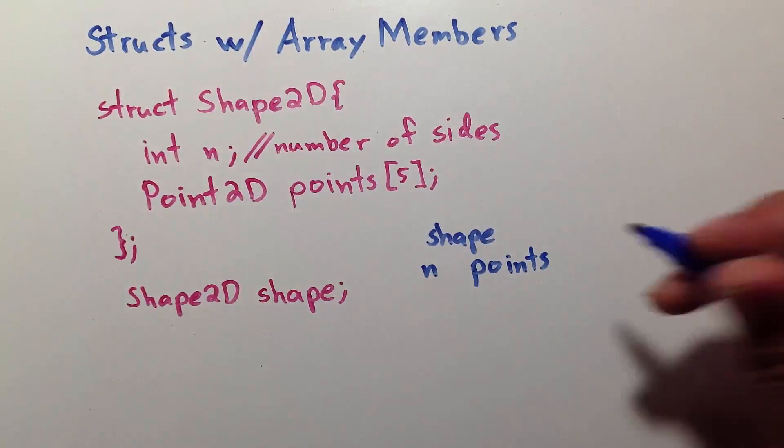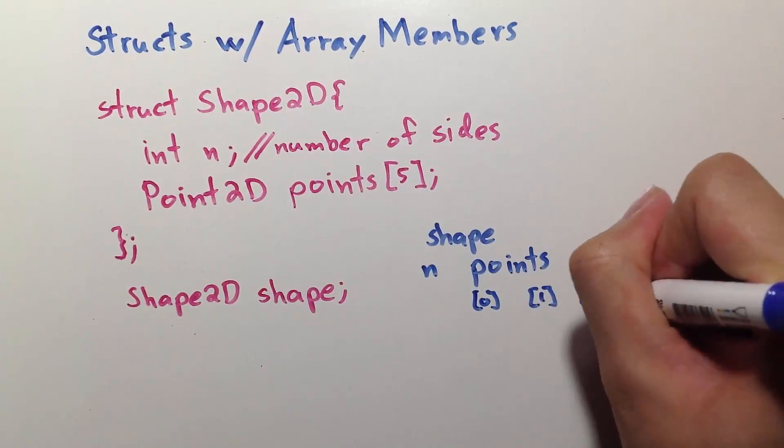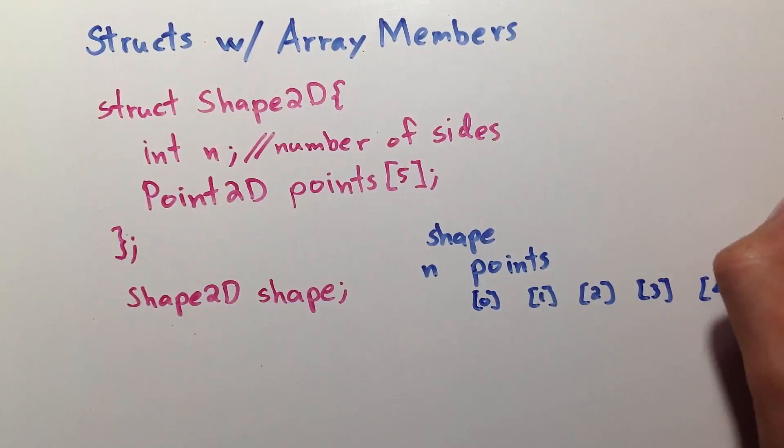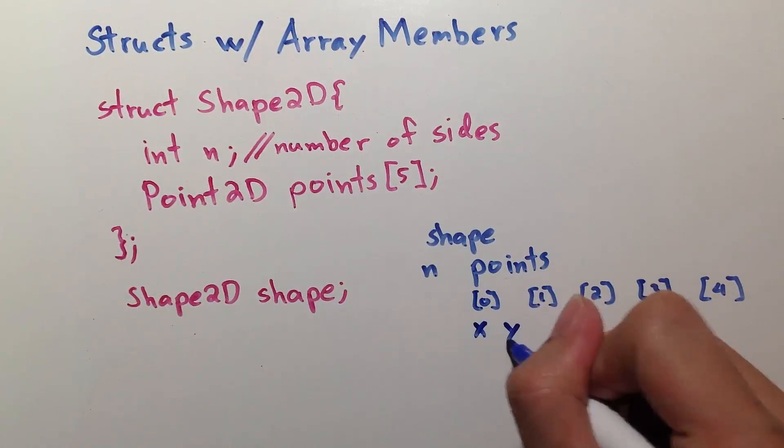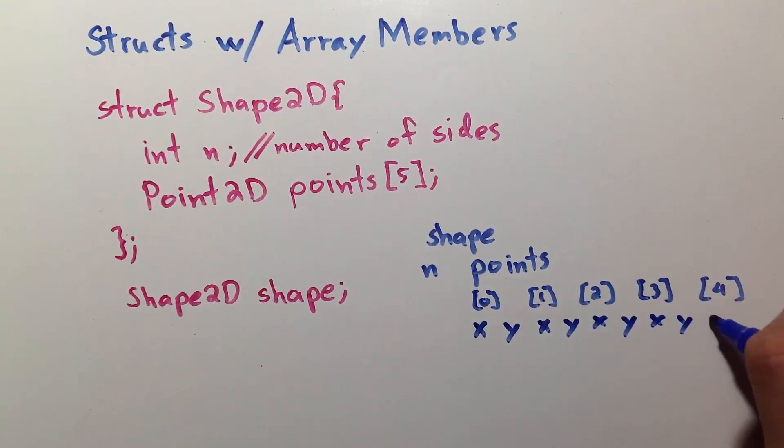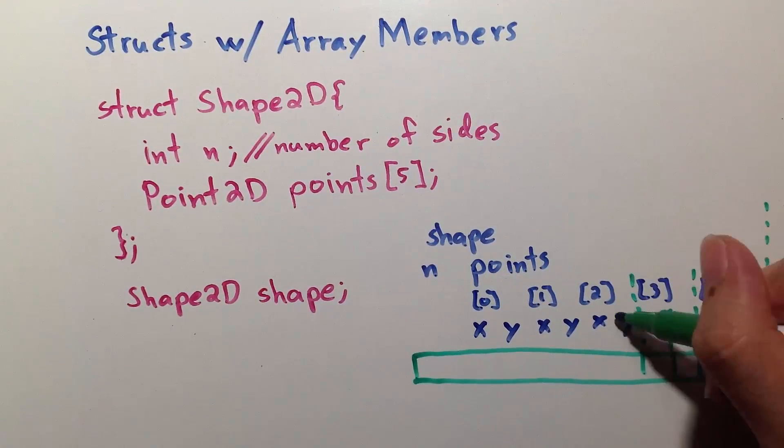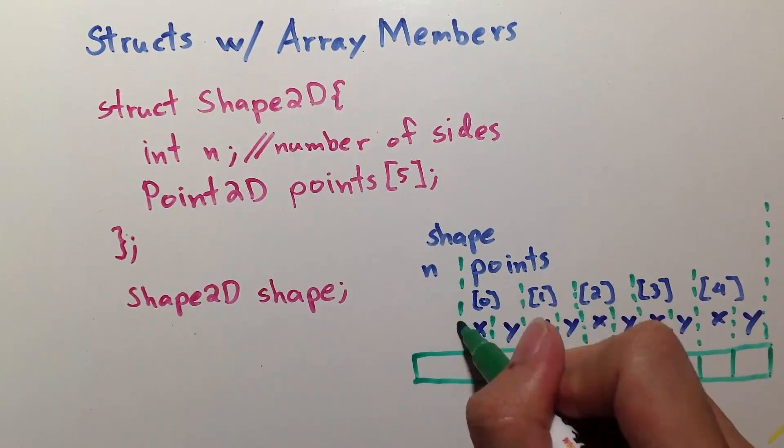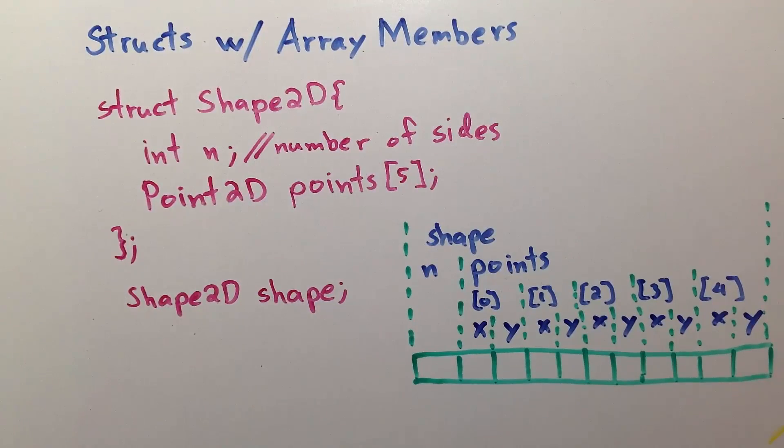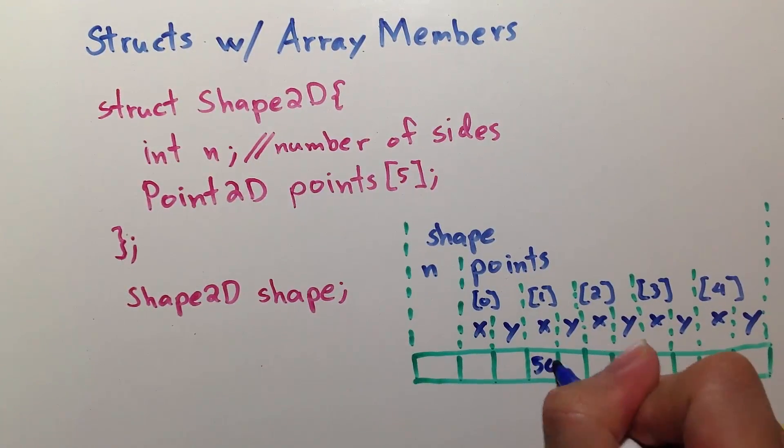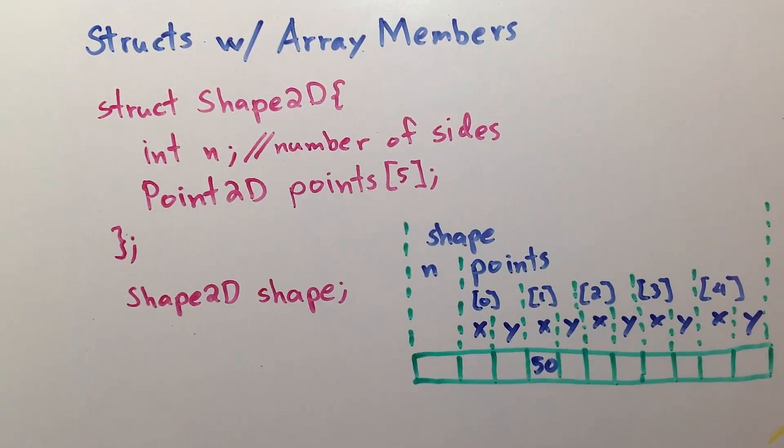And it's just an integer, so we can leave it. Points is an array with five elements, where each element is of type point2d, meaning each element of the array has an x and a y. This is how shape looks like in memory. Now, what is the statement if we want to change this variable to 50? Following the diagram, we start from shape,